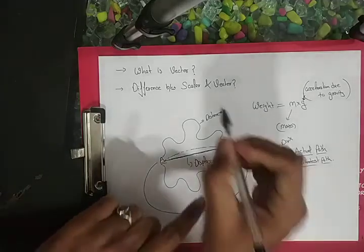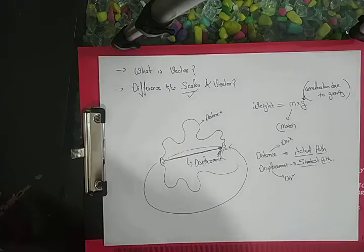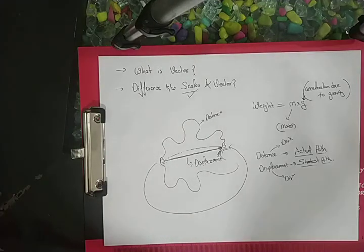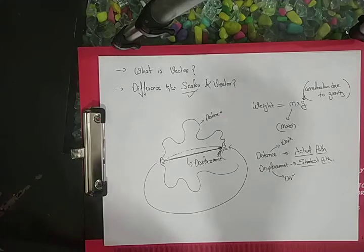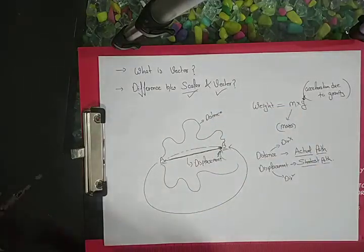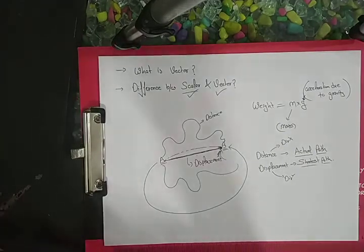Whereas the things which have magnitude but as well as direction also - quantities which have magnitude for sure, but also have direction - they are called vectors.